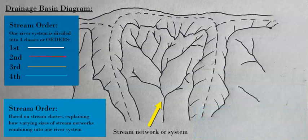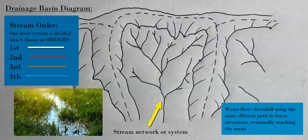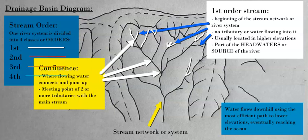The first order stream is the small brook, creek, or small channel of water that is overland flow, flowing downhill with gravity down the relief, topography, or landscape, using the easiest and quickest route down to a lower elevation. The first order stream then connects with other first order streams to make a larger channel.